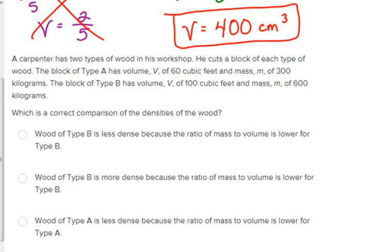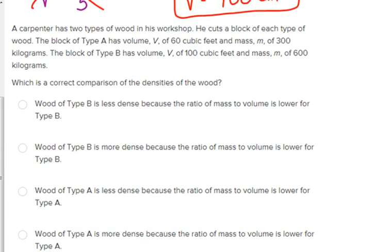Alright. Last one I want to show you here. It says a carpenter has two types of wood in his workshop. He cuts a block of each type of wood. The block of type A has a volume of 60 cubic feet and a mass of 300 kilograms. The block of type B has a volume of 100 cubic feet and a mass of 600 kilograms, which is a correct comparison of the densities of the wood. So, let's compute the densities for each one. Again, I'm going to use A and B instead of two Ds, so I don't get confused. So, A is equal to its mass, 300, divided by its volume. Be careful that they gave you volume first. Make sure you don't put that on top because it was listed first. So, that gives us a density of 5 for block A.